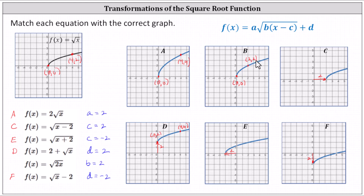Hopefully we can visualize compressing the basic square root function horizontally by a factor of one-half, which would resemble the shape of graph B. I hope you found this helpful.